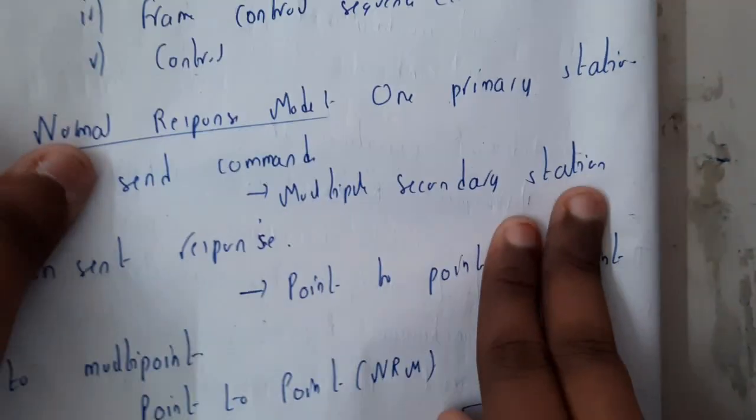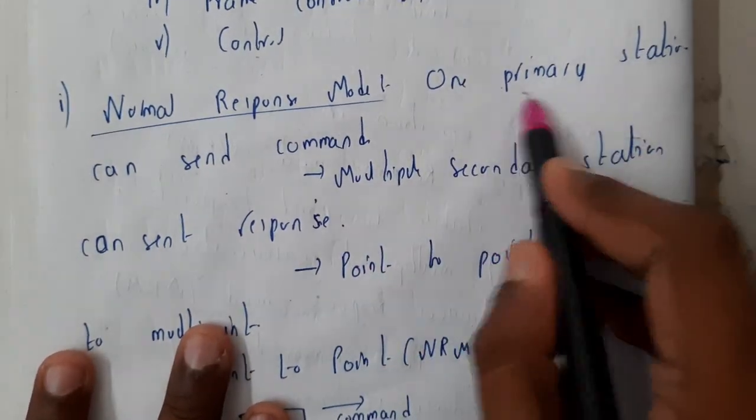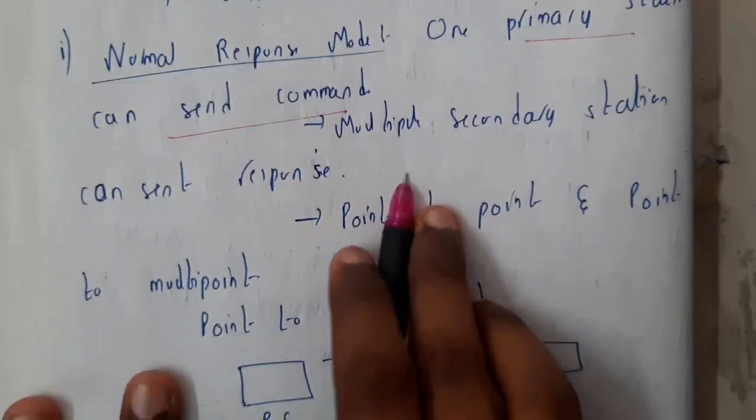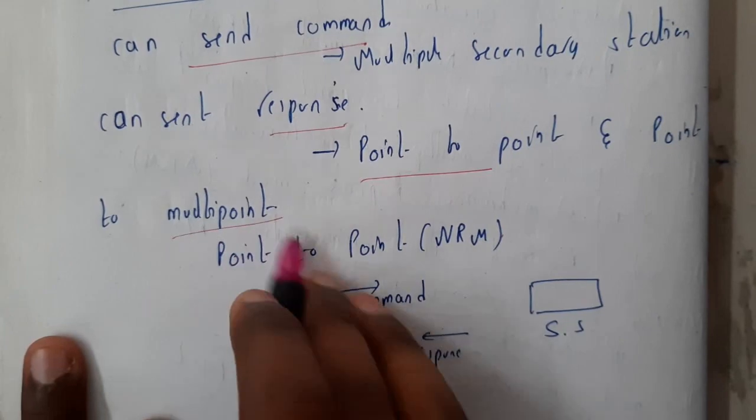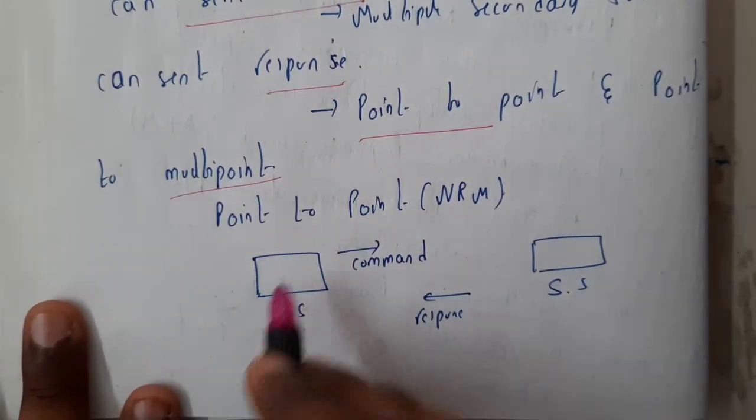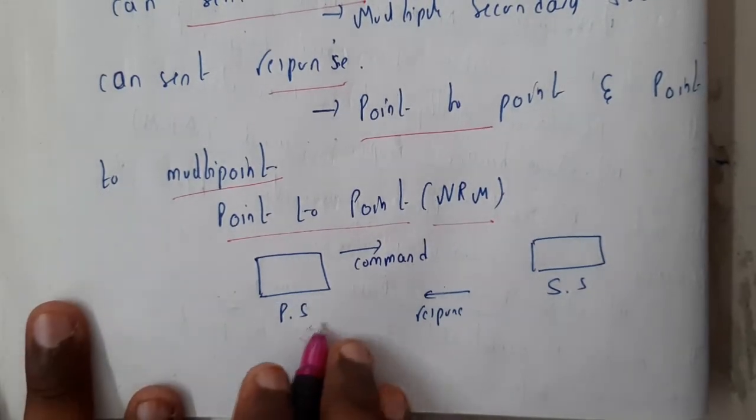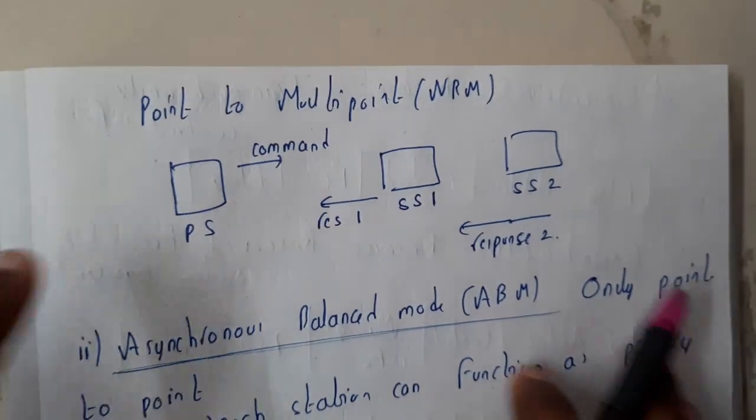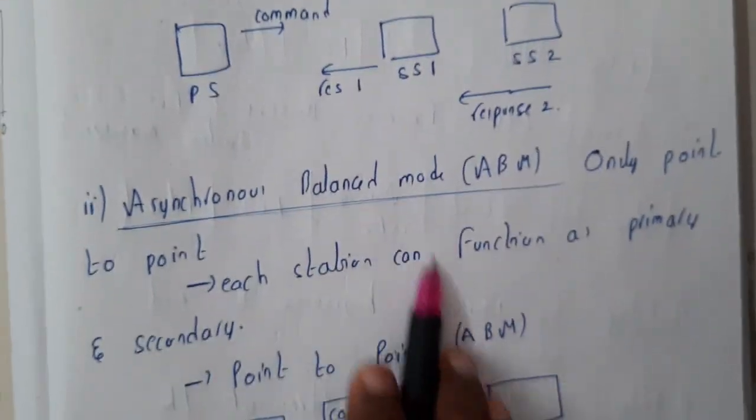Normal response mode means one station can send only one command, and multiple stations can respond. In simple words, we can say point-to-point is NRM, normal response mode. One station will send the command and this will send the response. If there are multiple stations, one will send the command and both will send responses.